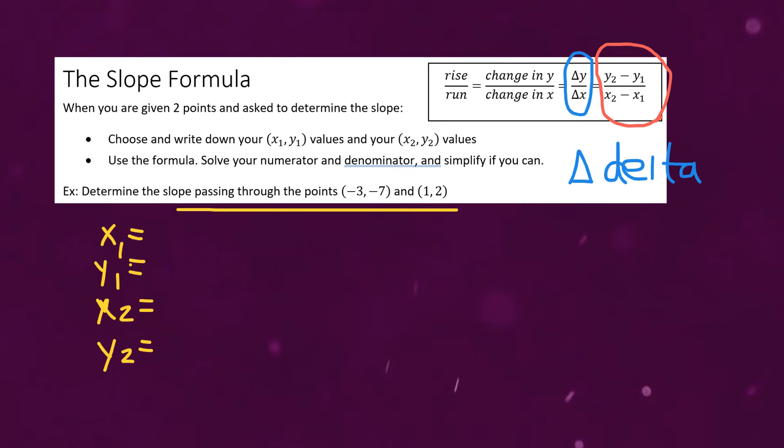At any rate to figure out a question like this our first step is to choose and write down your x1 y1 values and your x2 y2 values. x1 y1 just represents one of the two points that we're given. x2 y2 represents the second point. We call them x1 and y1 because it's the x coordinate of the point and the y coordinate or the y value. So for example let's call this one our x1 y1 so in that case our x value is negative three. Our y value is negative seven. And then the point (1, 2) that's going to represent our x2 y2 point. So x2 has a value of one and y2 has a value of two.